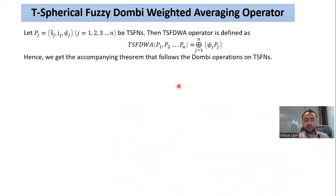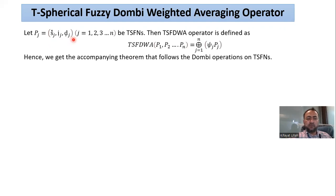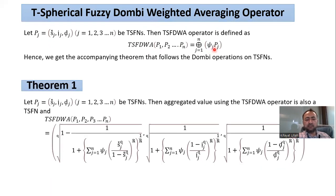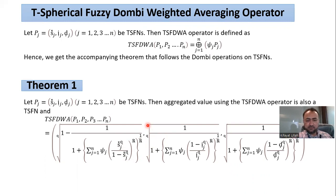Based on these Dombi operations, we define the T-spherical fuzzy Dombi weighted averaging operator (TSFDWA). For a finite collection of T-spherical fuzzy numbers Pj, this operator is defined by a given expression. Expanding this expression yields Theorem 1, which is very useful in the aggregation process and is used in the decision-making examples in later slides.